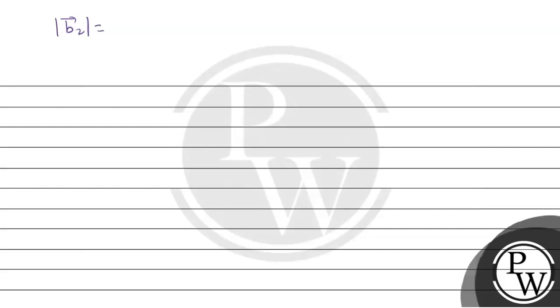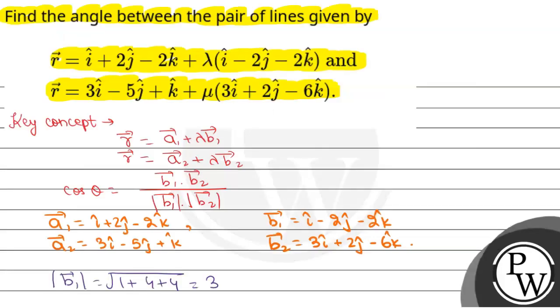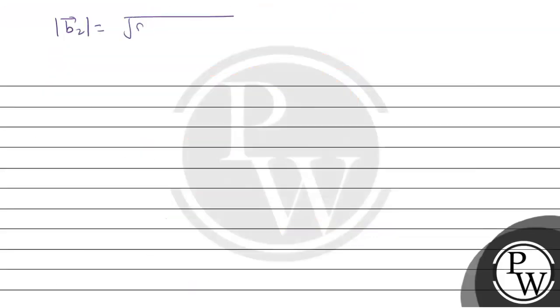Mod of vector b2 is under root 3 squared is 9 plus 2 squared is 4 plus minus 6 squared is 36, so the value is under root 49 which is 7.